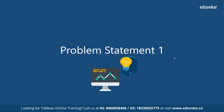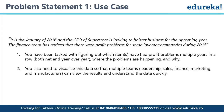The first problem statement we are going to work on: it is January 2016 and the CEO of a Superstore is looking to bolster business for the upcoming year. The finance team has noticed profit problems for some inventory categories during 2015. We have been tasked with figuring out which items have had profit problems multiple years in a row, where the problems are happening and why, and we also need to visualize the data so that multiple teams — leadership, sales, finance, marketing, and manufacturers — can view the results and understand the data quickly.